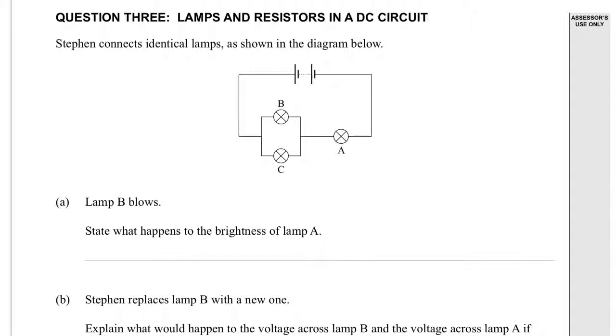Stephen connects identical lamps as shown in the diagram below. Lamp B blows. State what happens to the brightness of Lamp A.